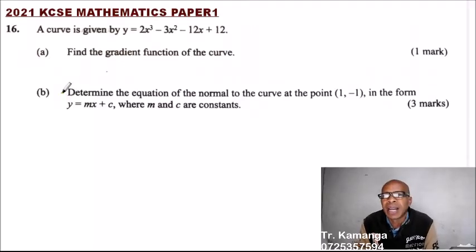Question number 16. A curve is given by y equals 2x cubed minus 3x squared minus 12x plus 12. Part A.